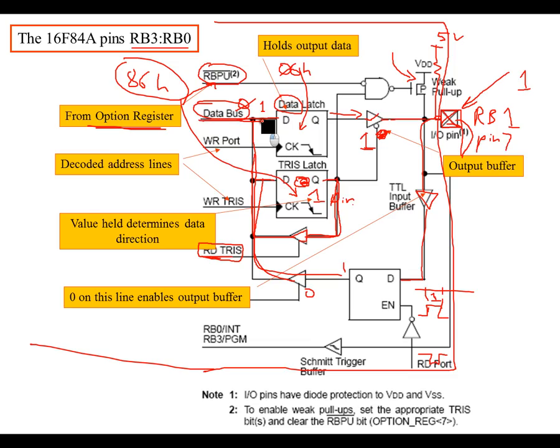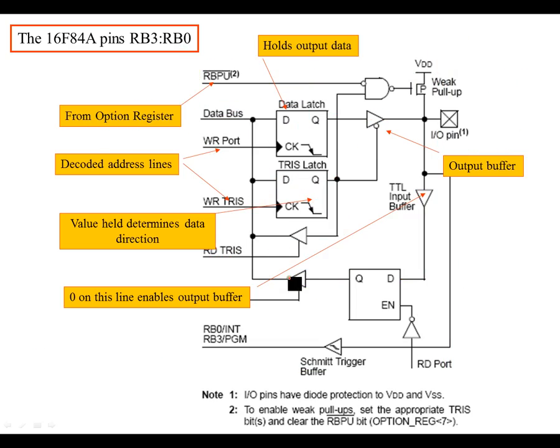So you can see that you can send data here on the data bus to the TRIS latch and the data latch, and you can read the TRIS output here, and you can also read the input here. So you can see that you basically have four connections. One, two, three, four. This is the data bus. This is one connection. This data goes into the latch, so that's writing. You got this connection, writing the TRIS latch, which is the direction latch, and then you got two reading options. You can read here. This is the TRIS output, so you can actually read to make sure the TRIS value is what you want it to be, and you can also read the input from this input buffer here. So those are the four different options.